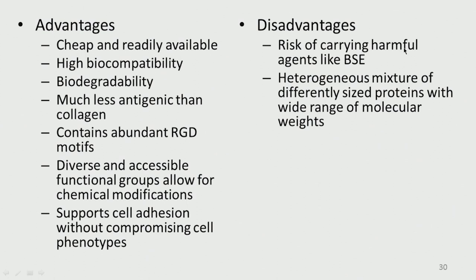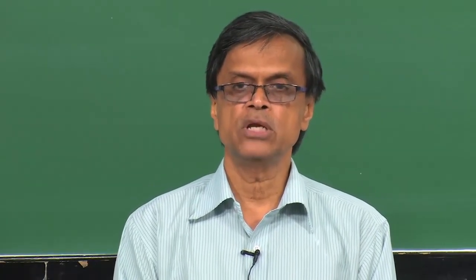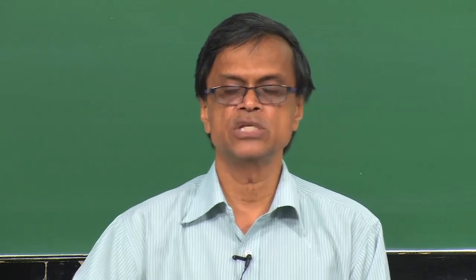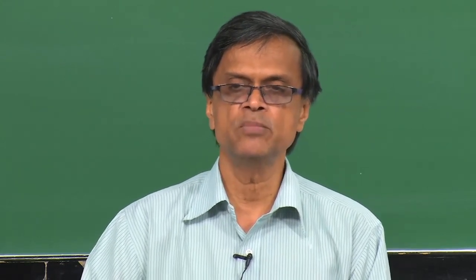Disadvantages of gelatin include the risk of carrying harmful agents and bovine-related toxicity. It is also a heterogeneous mixture of different sized proteins with a wide range of molecular weights, because hydrolysis of collagen produces polypeptides of different chain lengths and different molecular weights. So properties will be more of an average rather than singular.